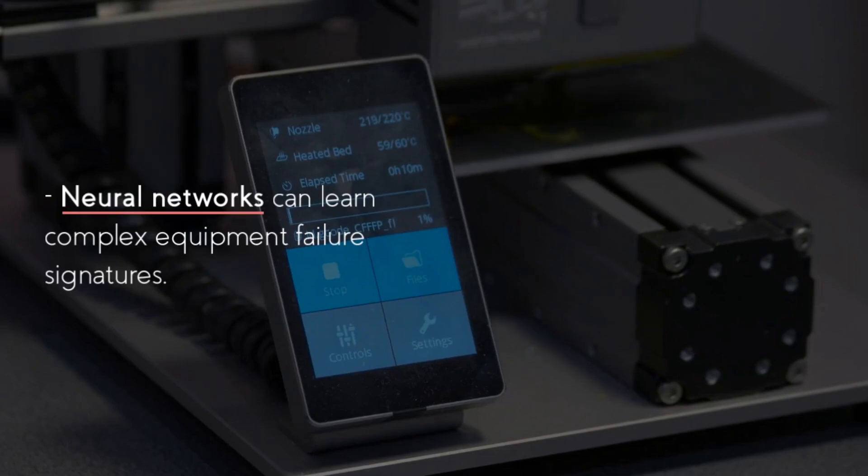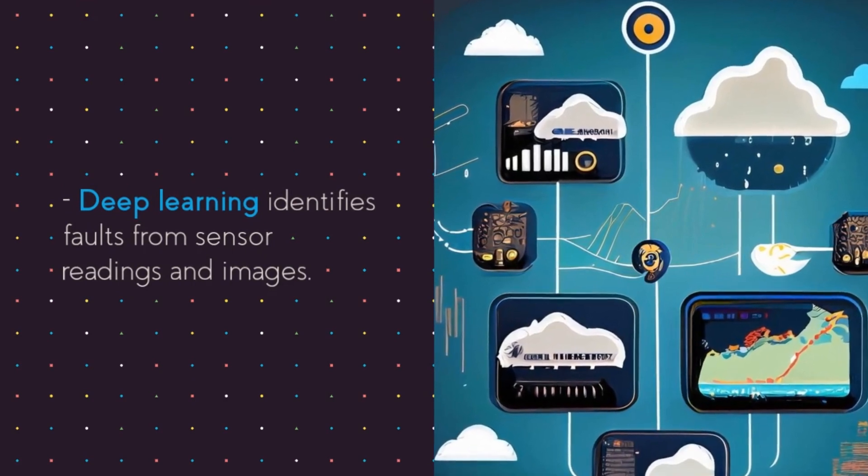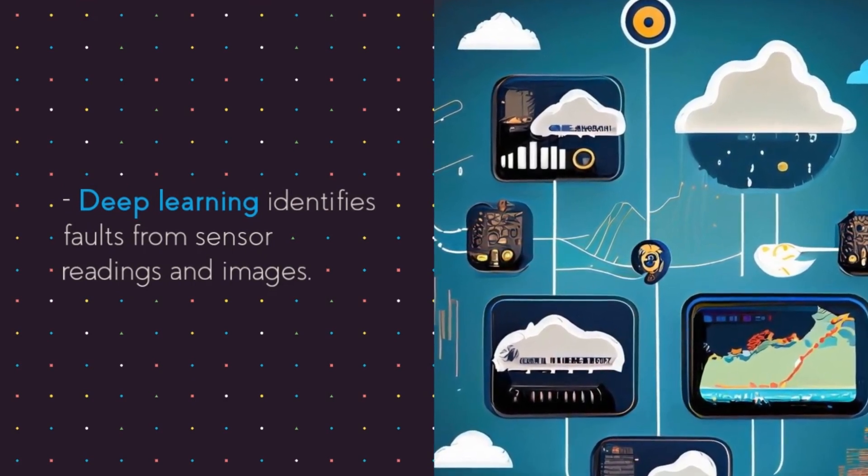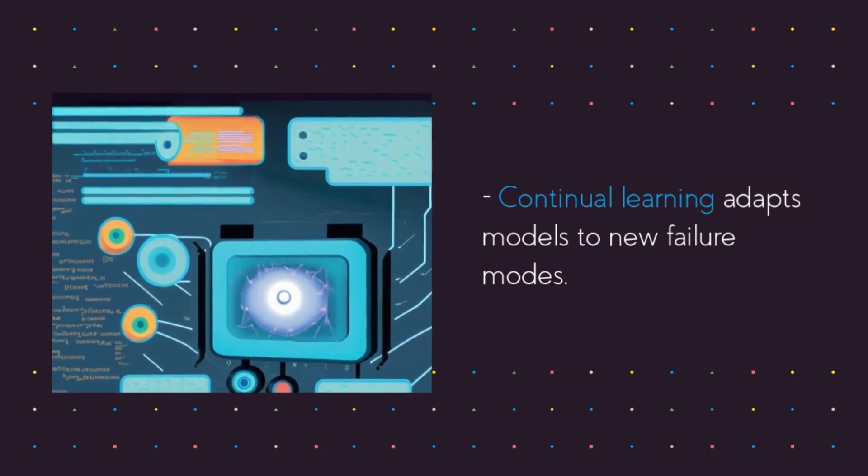AI systems like neural networks can learn the unique signatures of different equipment failures from data. Deep learning can identify faults from sensor numbers and photos. The AI keeps improving by learning about new kinds of faults.